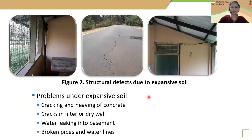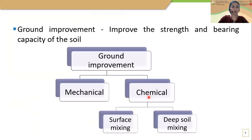Because of this undesirable swell and shrink behavior, lightly loaded structures can be severely distressed. To overcome these problems, we can go for ground improvement methods which improve the strength and bearing capacity of the soil. Ground improvement methods can be classified into two: mechanical method and chemical method.